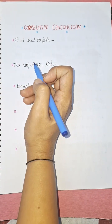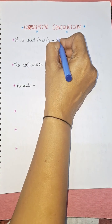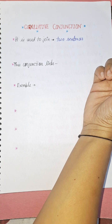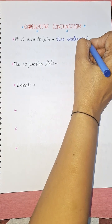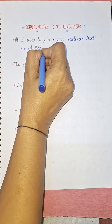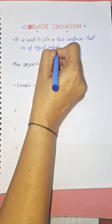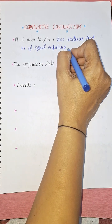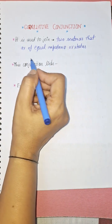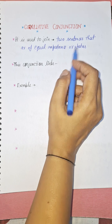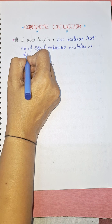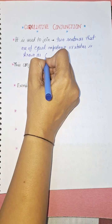It is used to join two sentences, two phrases, or two words that are of equal importance or status. Words which connect two sentences that are of equal importance or status are known as correlative conjunctions.